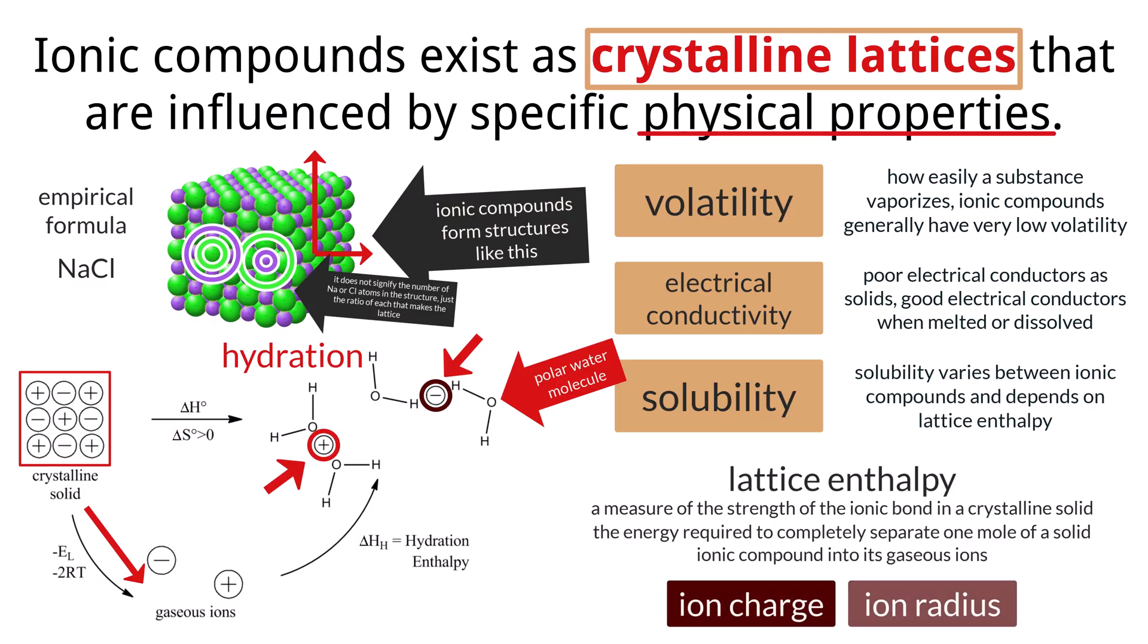Two primary factors influence lattice enthalpy, ion charge and ion radius. According to Coulomb's law, the force of attraction between charged particles is directly proportional to the product of their charges and inversely proportional to the square of the distance between their centers. In ionic compounds, this means that ions with higher charges will have stronger electrostatic attractions and thus higher lattice enthalpies.